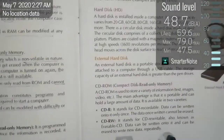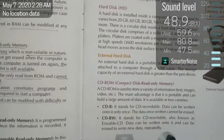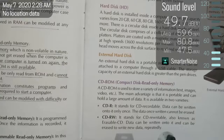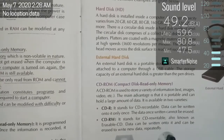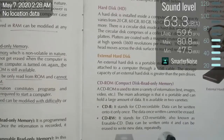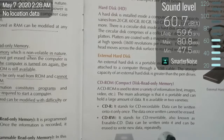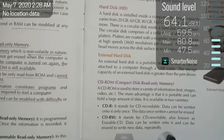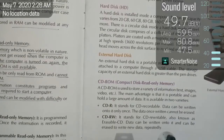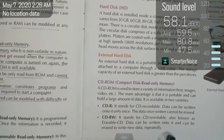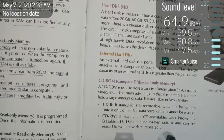Example number one is the hard disk, or HD. A hard disk is installed inside a computer. It is a device that stores information and is installed inside the CPU. Its storage capacity varies from 20 GB, 60 GB, 80 GB, 160 GB, 250 GB, 320 GB, and more. As the capacity increases, the price also increases.